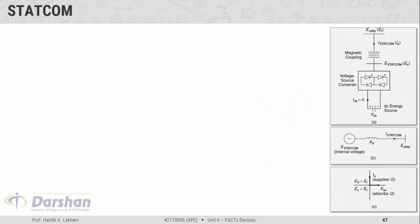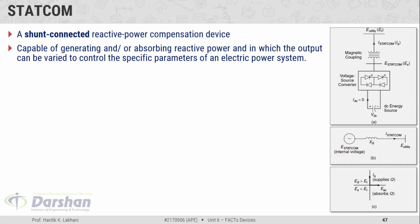Here is the power diagram, equivalent circuit diagram, and power flow exchange diagram of STATCOM. It is a shunt-connected reactive power compensation device. In the classification of FACTS devices, we have seen that STATCOM falls under the shunt-connected category. It is capable of generating and/or absorbing reactive power, and its output can be varied to control specific parameters of an electric power system.